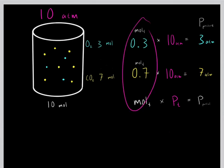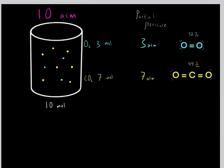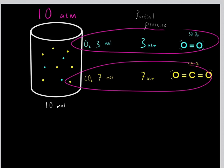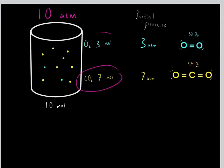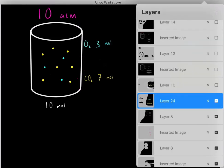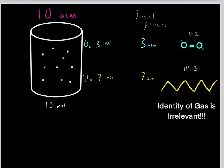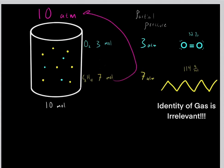If you take the mole fraction of a gas and multiply it by the total pressure, you get the partial pressure. Something important to realize is that the identity of the gas has no bearing on how individual gas molecules influence the total pressure. It doesn't matter if we have 7 moles of carbon dioxide or 7 moles of octane gas — as long as the mole fraction is 0.7, it will contribute 70% to the total pressure.